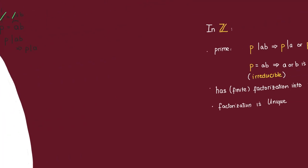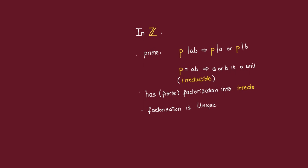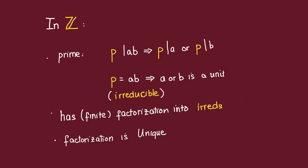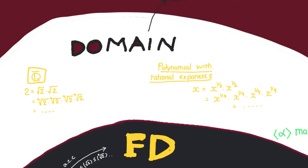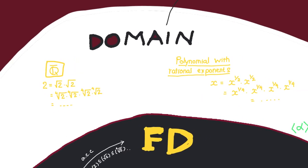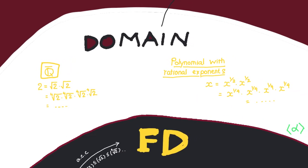Unlike the integers, in which every integer has a finite factorization into irreducibles and moreover the factorization is unique, for a general domain we might not even have factorization into irreducibles. And when we do have factorization, it might not be unique.